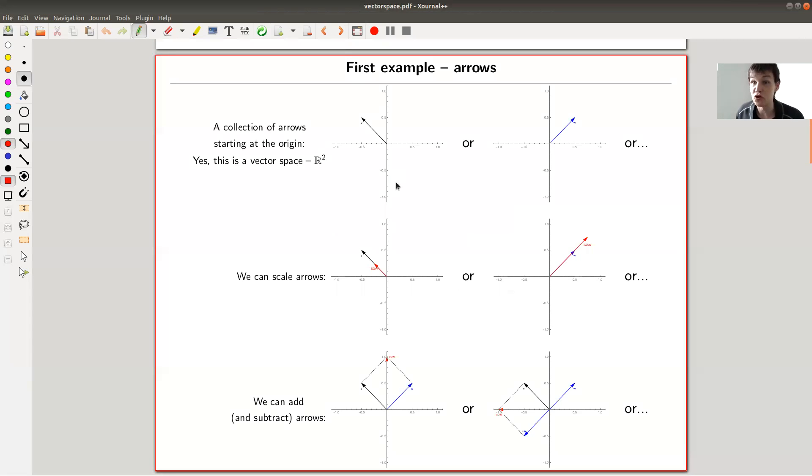So let's get started with vector spaces. I want to start with the first example. And I don't want you to think about vectors, because this is kind of a biased notion. We just want to look at certain examples. And I want to look at the first example, I want to look at a collection of arrows.